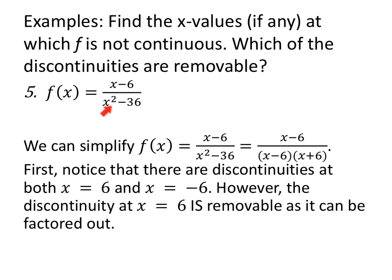f of x equals x minus 6 over x squared minus 36. We know that both x equals 6 and x equals negative 6 are not in the domain. But if we simplify — factoring the difference of squares in the denominator gives x minus 6 over x plus 6 times x minus 6. Notice they're both discontinuities: 6 and negative 6. However, the discontinuity at x equals 6 is removable because I can cancel that factor out — x equals 6 is a removable discontinuity because it has a common factor with the numerator. x equals negative 6, nothing we can do about that — that's a discontinuity that cannot be removed.